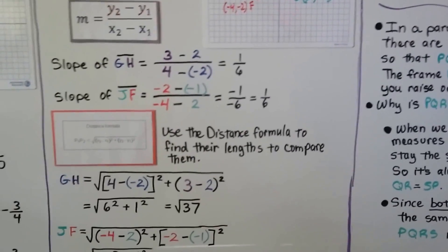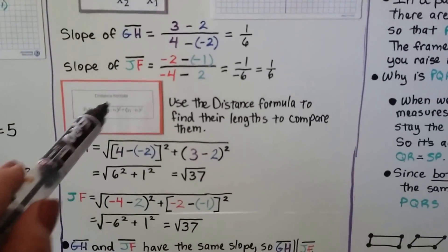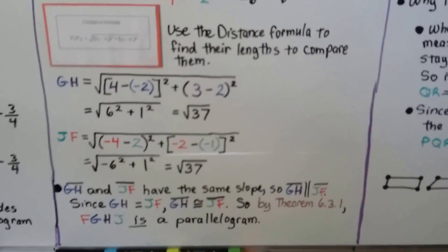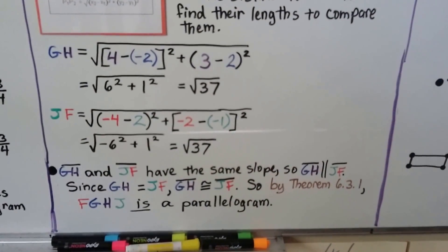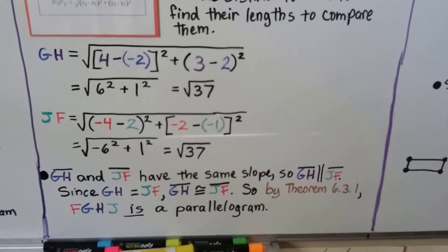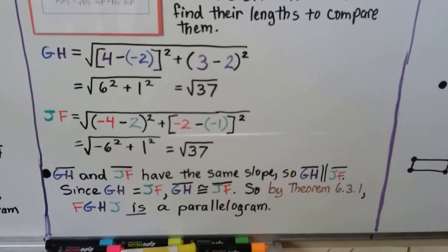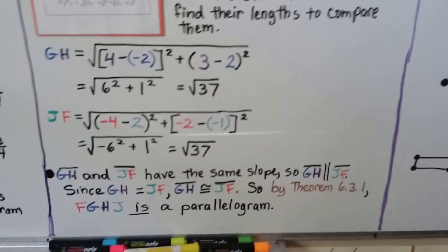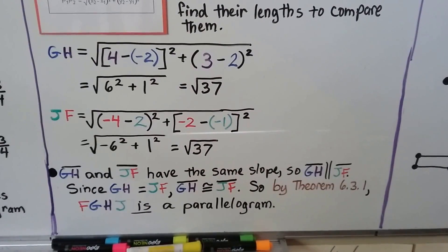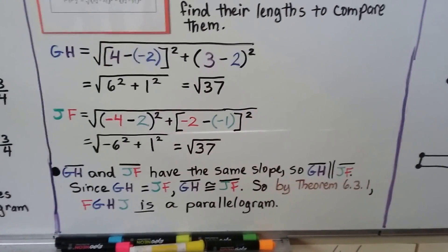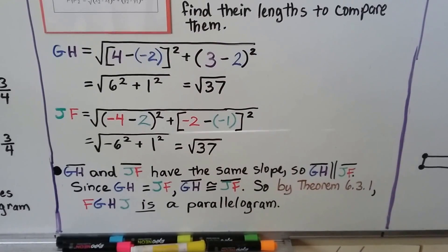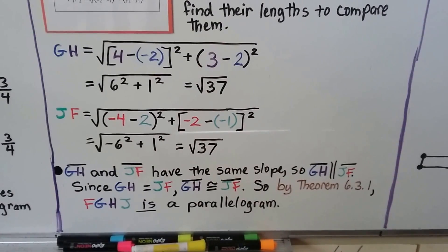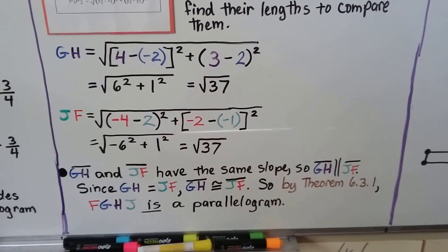We do it for JF, we put it into the distance formula, and we get the square root of 37 also. And segment GH and segment JF have the same slope, so segment GH is parallel to segment JF. And since GH equals JF, they both have square root of 37, segment GH is congruent to segment JF. So by the theorem 6.3.1 that says one pair of opposite sides are parallel and congruent, FGHJ is a parallelogram.